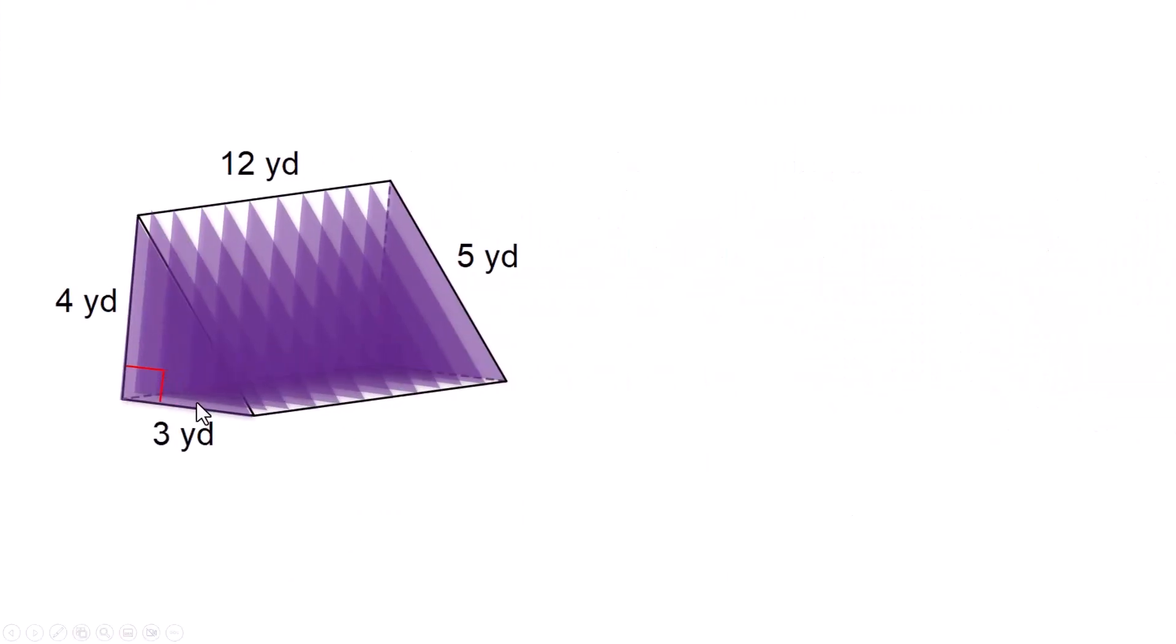This is a triangular prism. This triangle is a right triangle. This was the one I just showed you a minute ago but now you can see the measurements. So we start by finding the area of the base. It's a triangle so the formula is one half base times height. The base of the triangle is this side right here which is 3. The height of the triangle is 4.